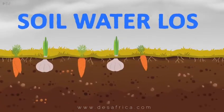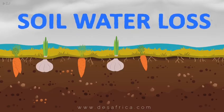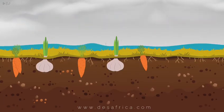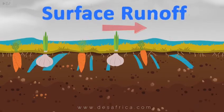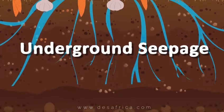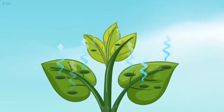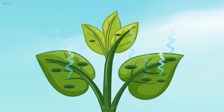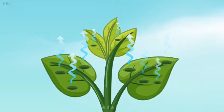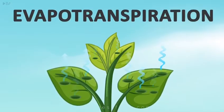Water is lost from the soil in several ways. These include surface runoff, underground seepage, and evaporation from soil surface and transpiration through leaves and stems of plants, which is known as evapotranspiration.